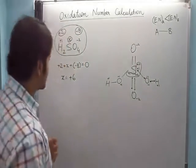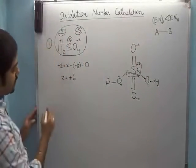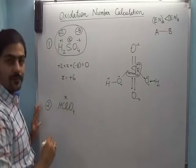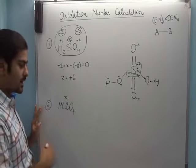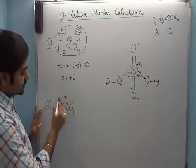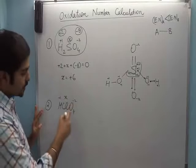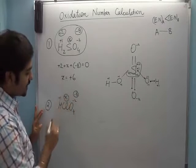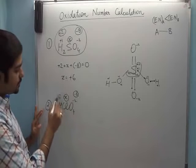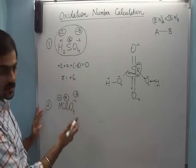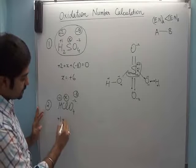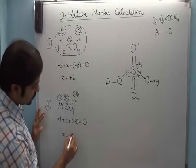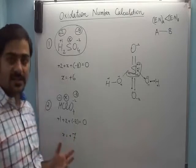Now question number two: HClO₄ — find the oxidation number of chlorine. Using the formula method: assume x for chlorine; hydrogen is plus one; oxygen is minus two, so four oxygens give minus eight. Overall the molecule is neutral: plus one plus x plus minus eight equals zero, so x comes out to be plus seven.